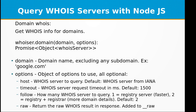Let's get started with the first drill — getting WHOIS info for domains. This function receives a domain name and options. The domain name can be anything like google.com, and options include: 'host' for the default WHOIS server from IANA, 'timeout' for request timeout defaulting to 1500 milliseconds, 'follow' for how many WHOIS servers to query, and 'raw' to return the raw WHOIS result.